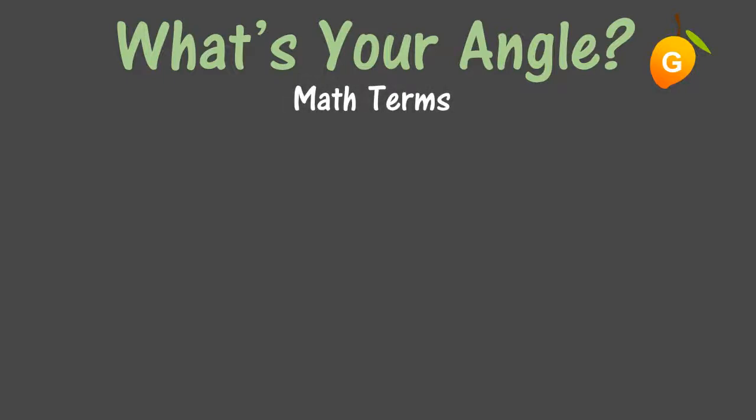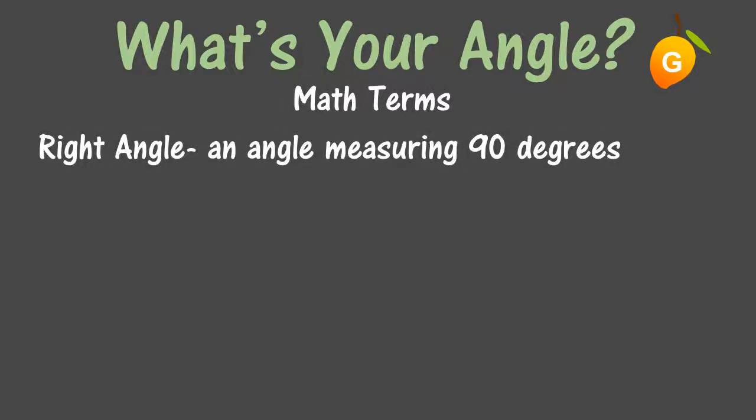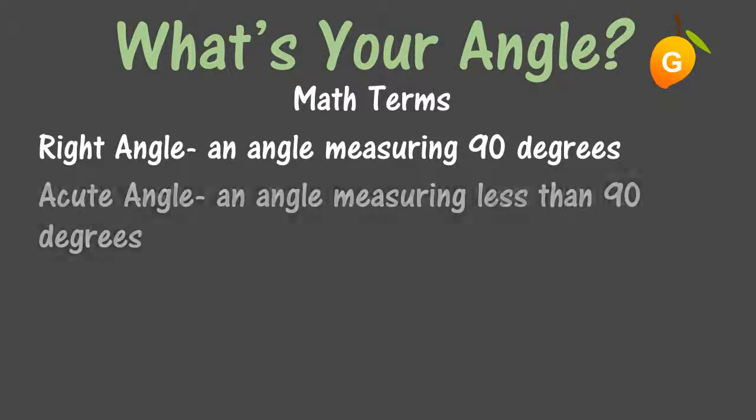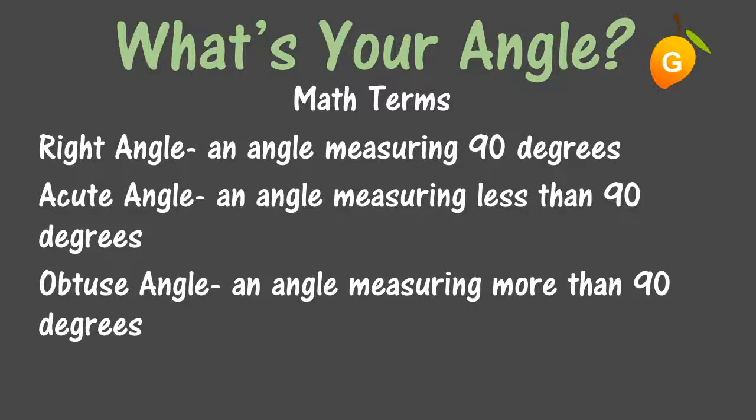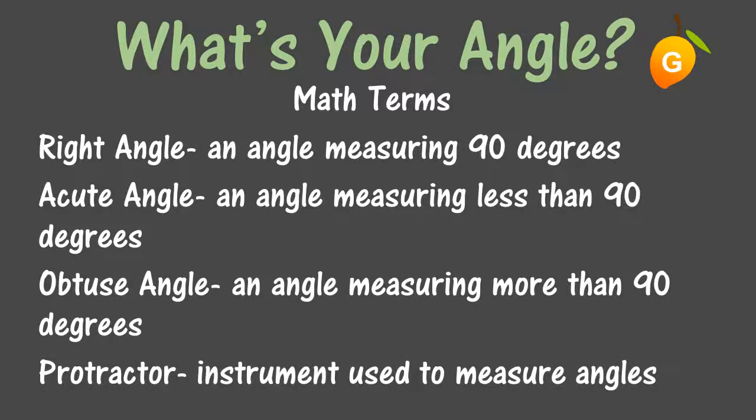What's Your Angle has some math terms to help increase understanding. Those are: right angle, an angle measuring 90 degrees; acute angle, an angle measuring less than 90 degrees; obtuse angle, an angle measuring more than 90 degrees; and protractor, the instrument used to measure angles.